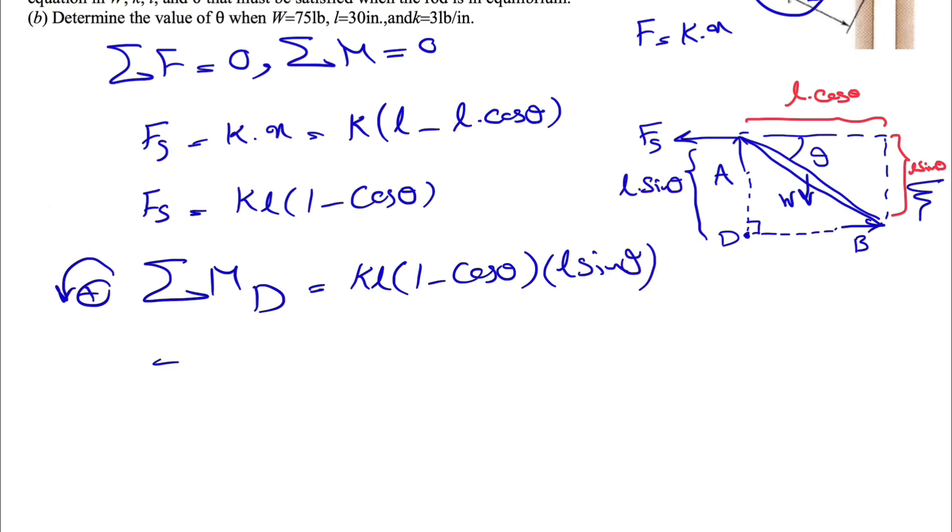We have the moment of W, which is clockwise, so we have a negative sign, and the distance will be L cosine of theta divided by 2, since the weight is applying at the centroid. We know this distance is L cosine of theta. And since it's a uniform rod, the center of gravity would be exactly in the center or in the middle of the rod.